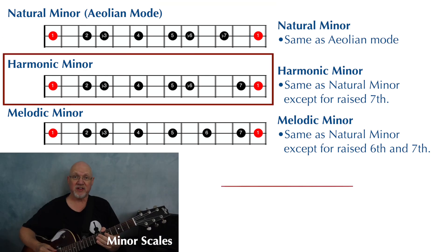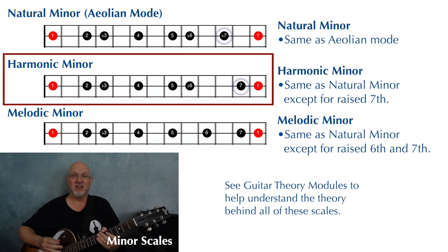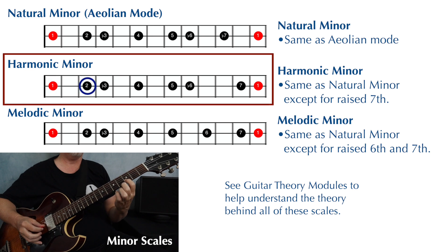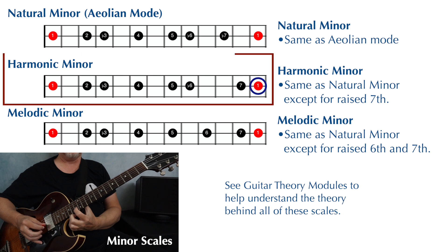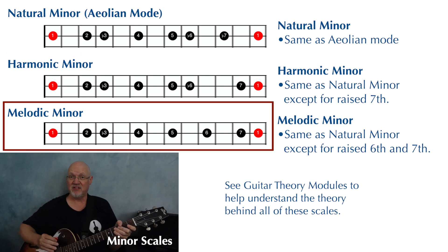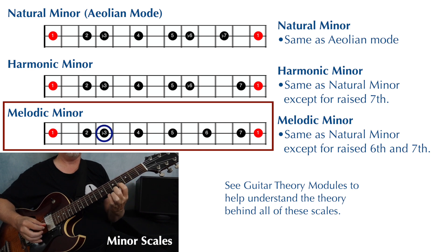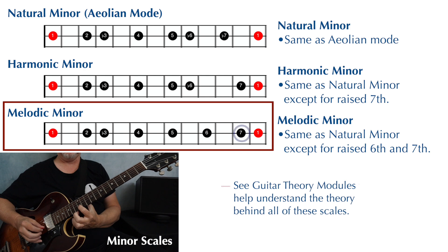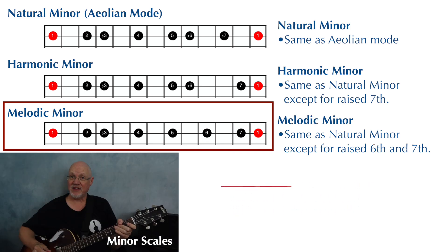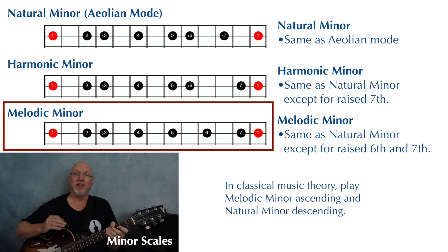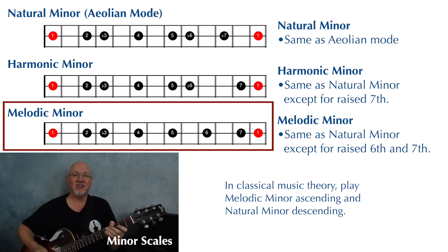The harmonic minor scale is the same as the natural minor scale, except the seventh is raised again — just a seven instead of a flat seven. The melodic minor compared to the natural minor has that flat three, but now we just have a natural six and seven. In classical music theory, the melodic minor is played with that raised sixth and seventh ascending, but then it's played as a natural minor descending with that flat six and flat seven.